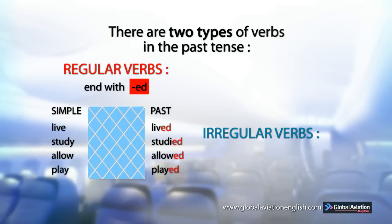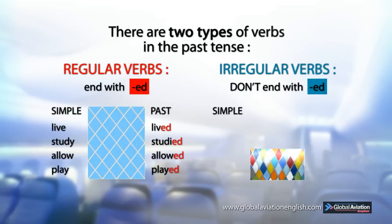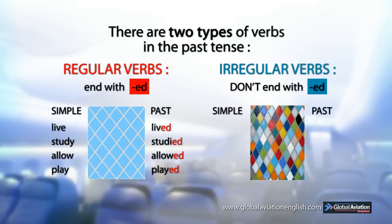Irregular verbs don't end with ED. Simple past examples: run → ran, sell → sold, bring → brought, hit → hit.